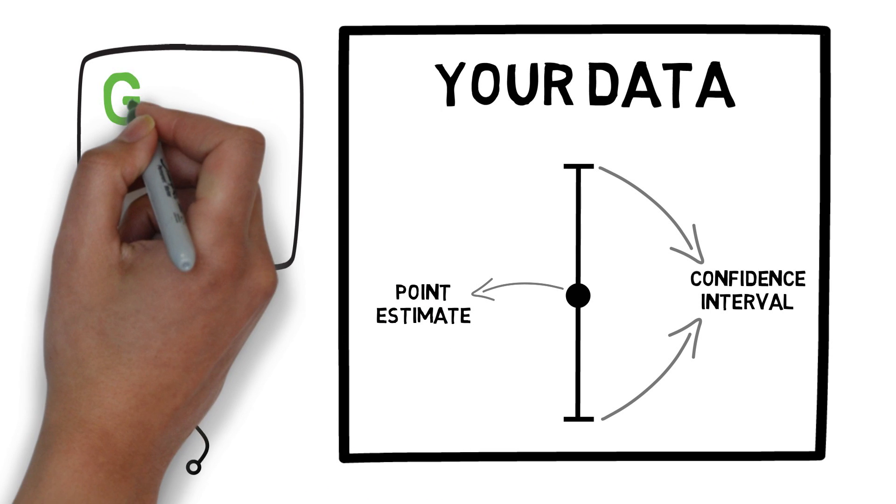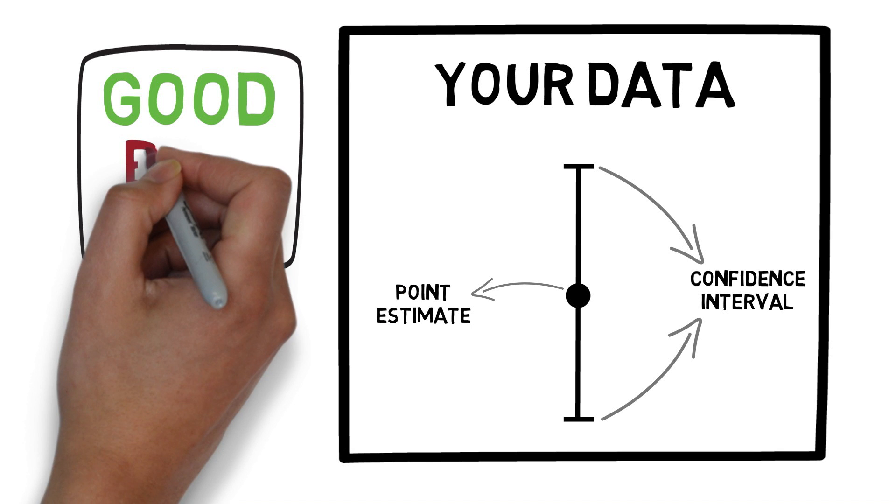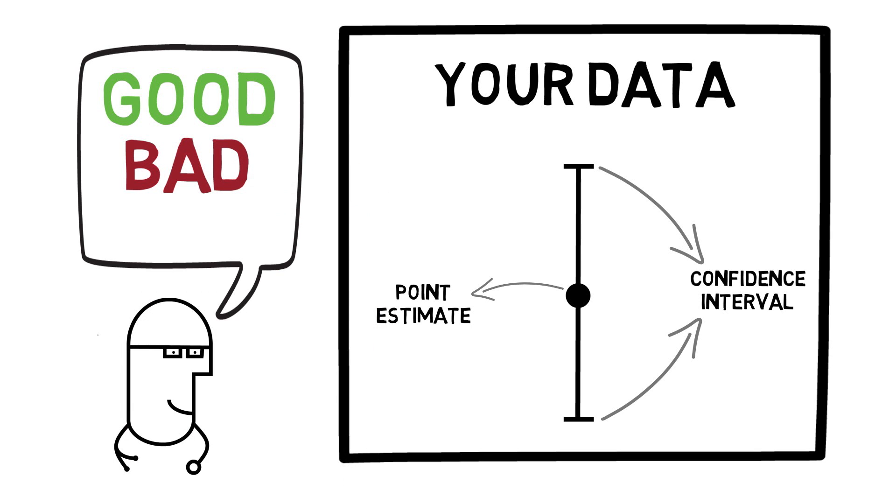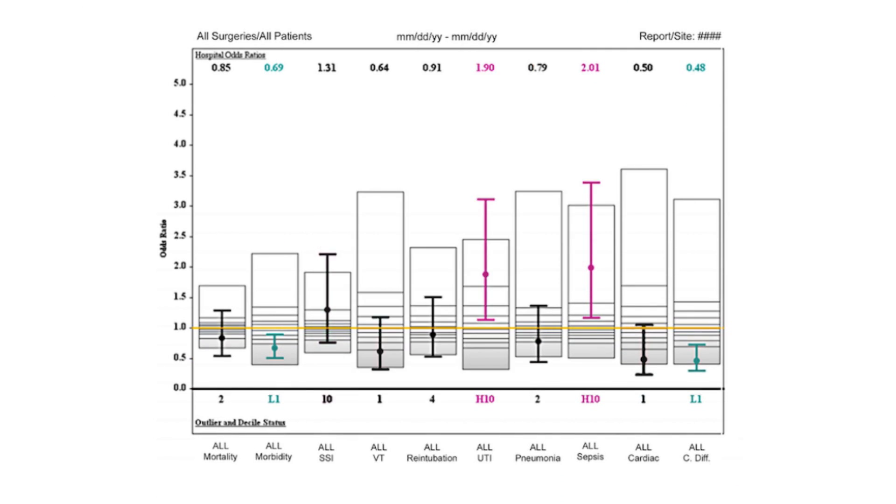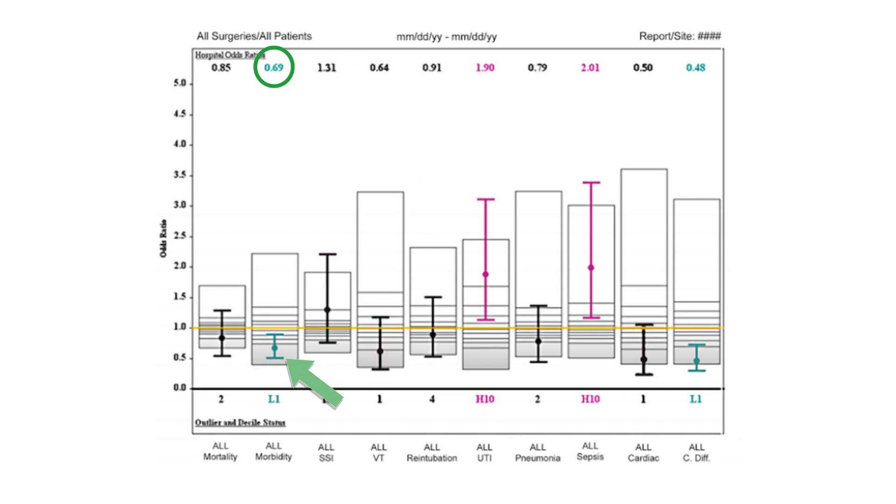You'll also notice that your data are presented in one of three colors. If your data are written in green, good news, you're providing exemplary care with regards to that metric. If your data are in red, unfortunately that's bad news and means that this is an area that needs improvement. If your data are in black, then you are as expected similar to your peers, which is not to say that you can't improve.